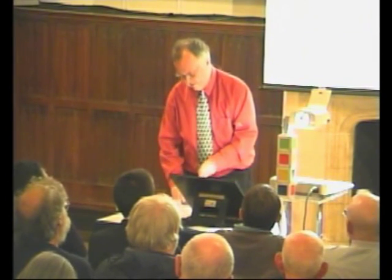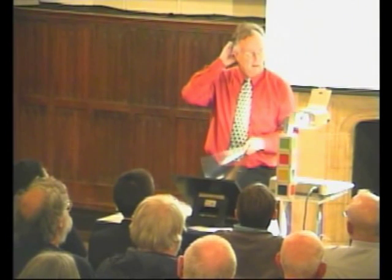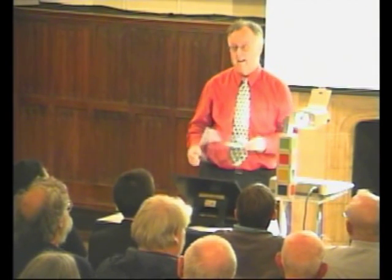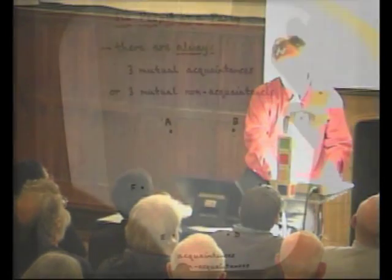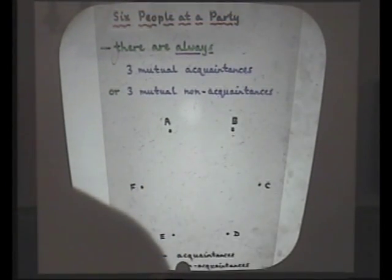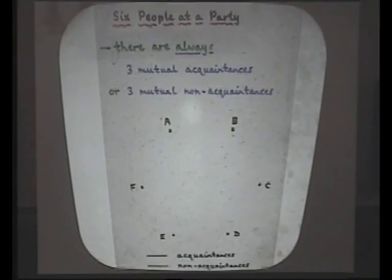A graph is like a road map with points and lines, or if you like the London Underground map. You've got what we call nodes or vertices, and you've got points joining them. And what I want to do is show you how such pictures can help you solve problems.